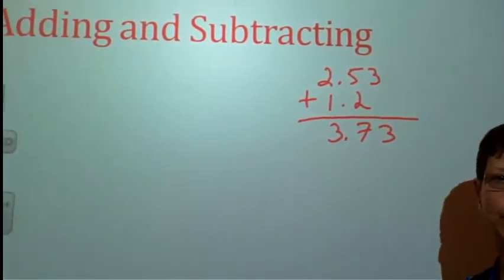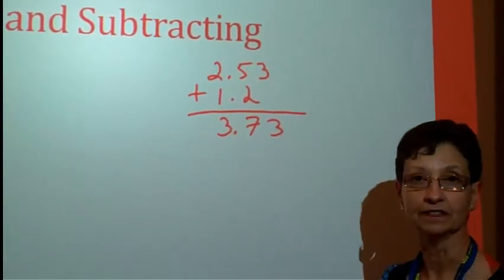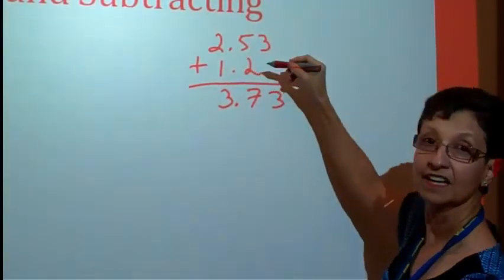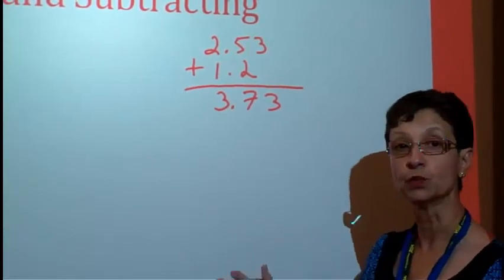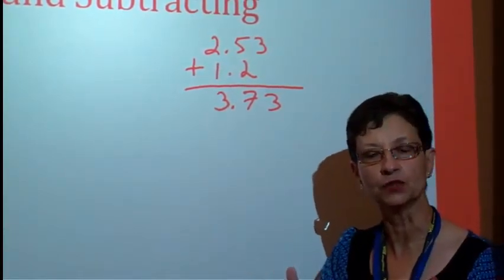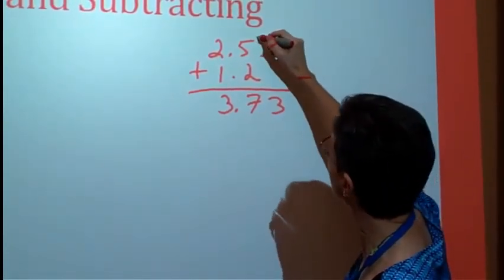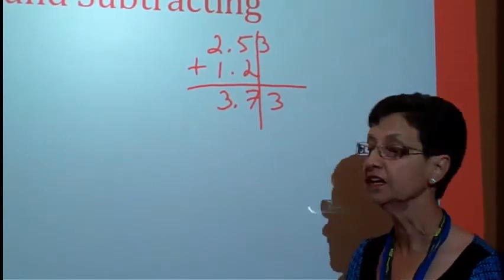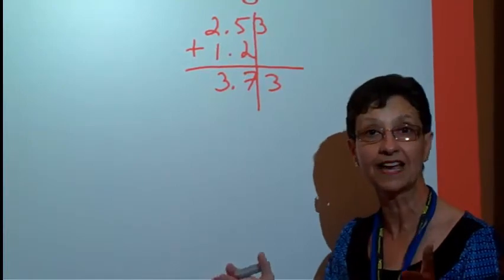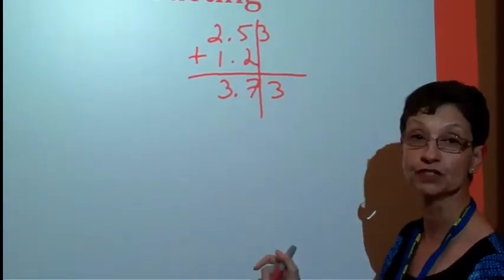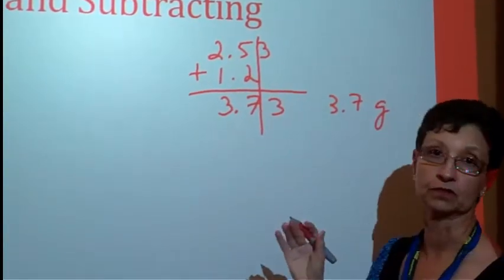We're going to add 3.73. Only that is not the correct answer. The correct answer is 3.7. Why? The least accurate measurement is 1.2. So therefore, we have to round to the least accurate measurement because we cannot be more accurate than our least accurate measurement. So the easy way to do it when you're using pen and pencil is to just draw a line after the last digit of the smallest or the least accurate measurement, and that's the way that you're going to round. So it'll be 3.7. Let's say these are grams.